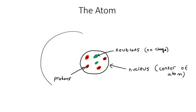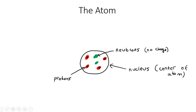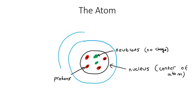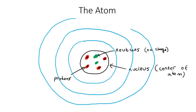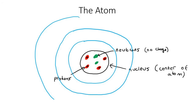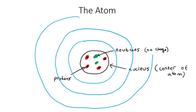On the outside are going to be these things called electrons. Different atoms have different amounts of these blue rings. Some of them have one ring, some have two, some have three, some have four — we'll get into that in later lessons. They're called energy levels, but for now I'm just going to put three rings.